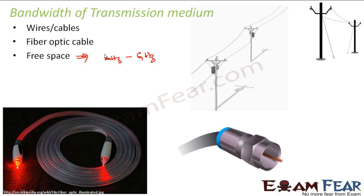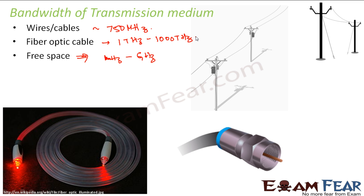So that is the frequency range for free space. When talking about cables — specifically coaxial cables, which have a central axis with two rounds of wires around it — these operate somewhere around 750 MHz. For fiber optic cables, through which optical communication happens, they operate somewhere between 1 terahertz to 1000 terahertz. So there are all different ranges of frequencies in which these different types of transmission media operate.